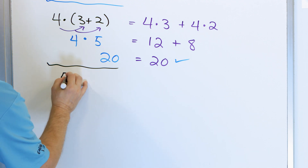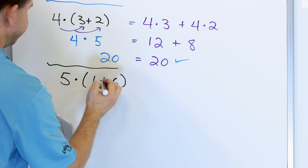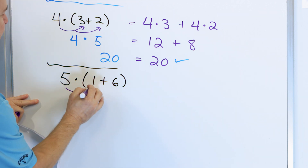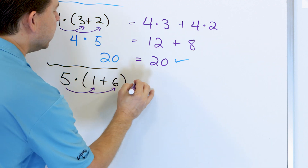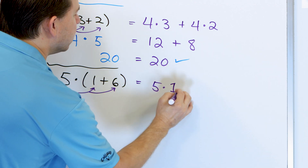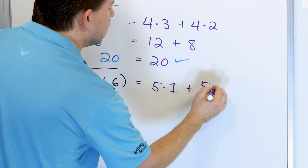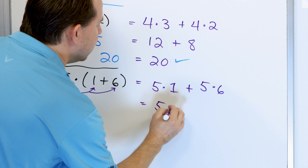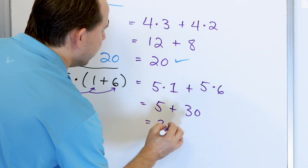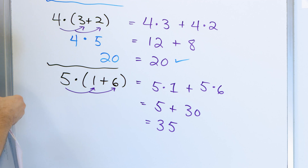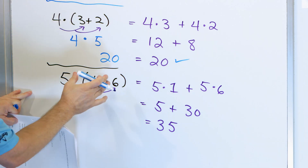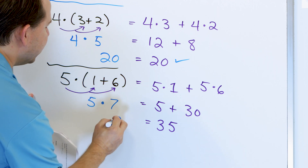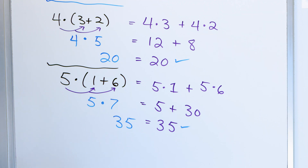Next: 5 times (1 plus 6). I distribute into the parentheses times the 1 and times the 6, giving 5 times 1, plus 5 times 6. 5 times 1 is 5, and 5 times 6 is 30, so we get 35. On the left-hand side, 1 plus 6 is 7, and 7 times 5 gives us 35. Everything checks out.